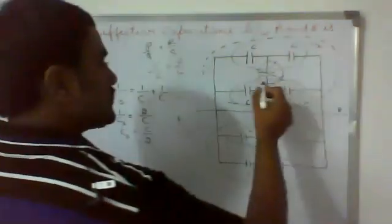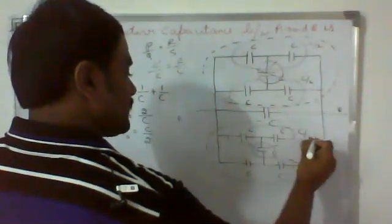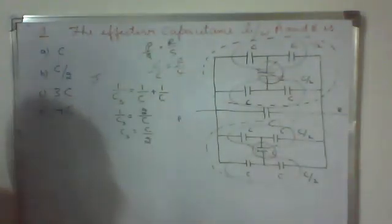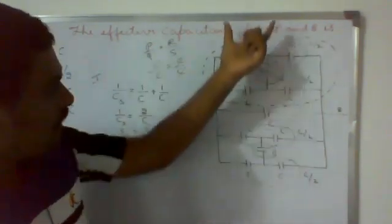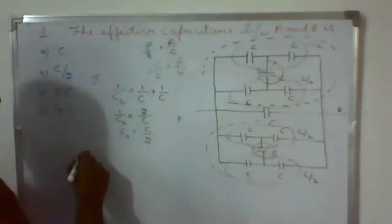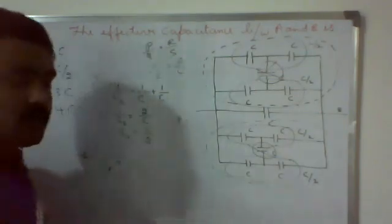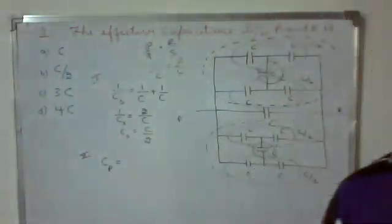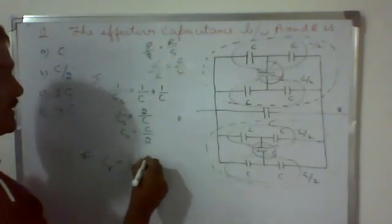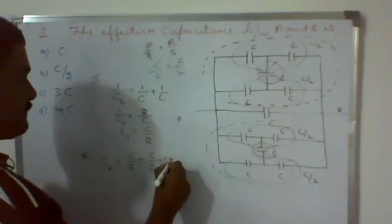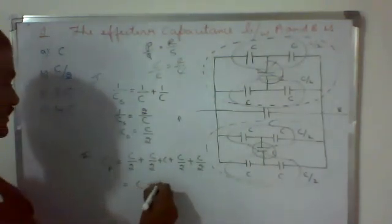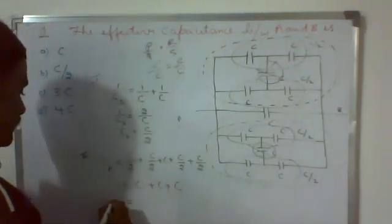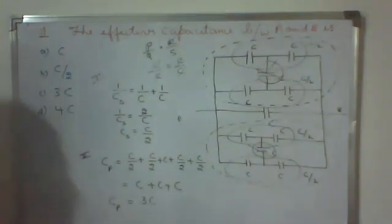This is also C/2, this one is also C/2, and this one is also C/2. Now C/2, C/2, C/2, C/2 — all are connected in parallel. If capacitors are connected in parallel, the effective capacitance is C1 + C2 + C3 + so on. So Cp = C/2 + C/2 + C/2 + C/2. C/2 + C/2 = C, and C/2 + C/2 = C, so finally we get 3C.